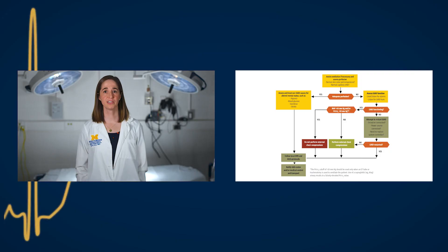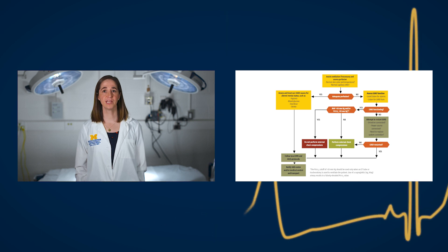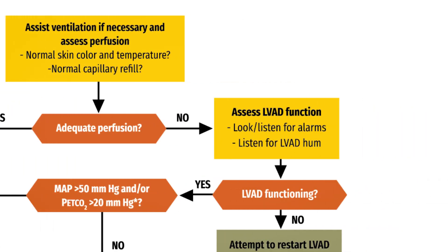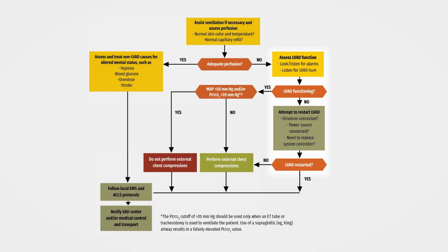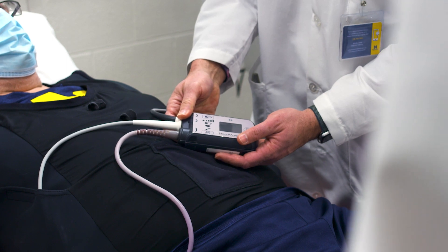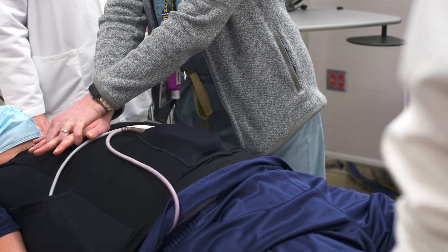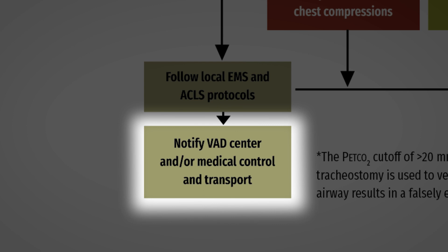We will now review how to assess the patient following the VAD-specific ACLS algorithm. The focus of this video is on a patient without adequate perfusion, after the first branch point of this algorithm. The VAD-ACLS algorithm can be broken down into three distinct parts: assessing the VAD, assessing the patient, and proceeding to the ACLS protocol, including CPR when indicated. Remember to always contact the local VAD team as you begin to troubleshoot issues related to the VAD device, as they can provide expert guidance during emergencies.